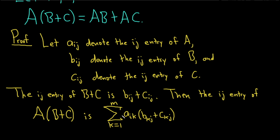Okay, so we're taking every entry in the i-th row of A and we're multiplying it by a corresponding entry in the k-th column of B plus C. That's how you perform the matrix multiplication. And let's leave it there. So that's what we have for the left-hand side.